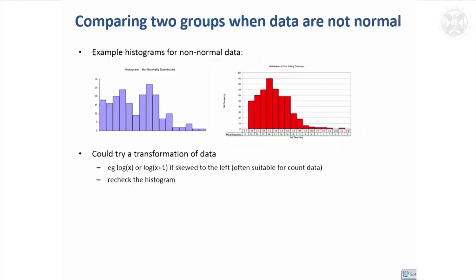So if you're in that situation, as I said, first of all, you might want to try a transformation of the data, such as using a log and rechecking the histogram, because it's always better if you can do a T-test. But if you just can't do that, you're going to have to move to the first of the non-parametric tests that we're going to look at.